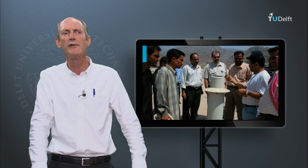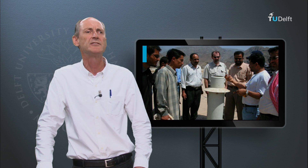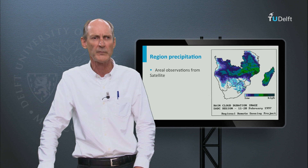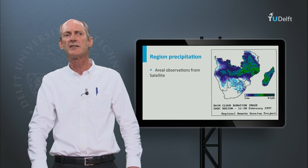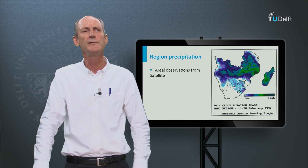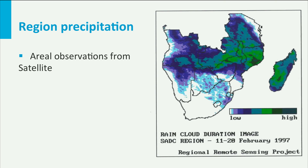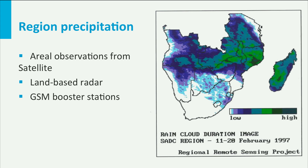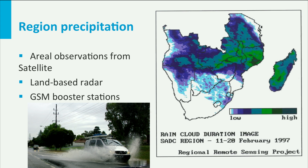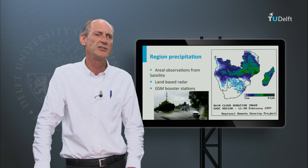Moreover, all these instruments provide point observations in space, and we have to be aware that rainfall can vary considerably in space. This is an example of the many new remote sensing products that are becoming available. They measure rainfall on the basis of radar, microwave and the temperature of the clouds. The picture shows how variable the rainfall is and that point observations can give a wrong impression of the average precipitation over the region. There are other new and innovative ways of precipitation measurement, such as land-based radar, information from GSM booster stations, and using the speed of cars or their screen wipers as a function of the weather.